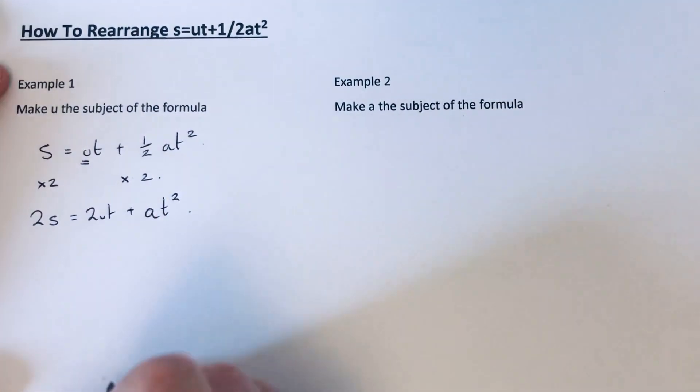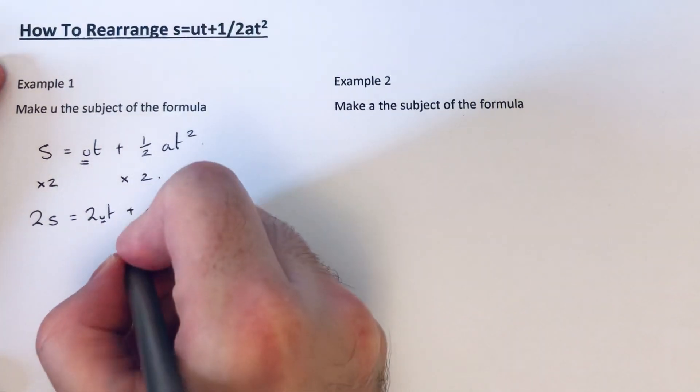So we've got to make u the subject. If we look at what's happening to u, it's been multiplied by 2t and then we're adding on at squared. So I've got to do the inverses in reverse. The first thing we want to do is get rid of that plus at squared by subtracting at squared.